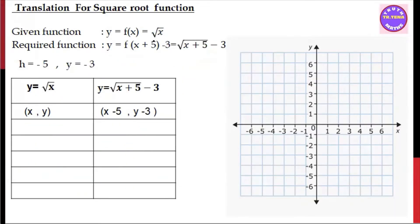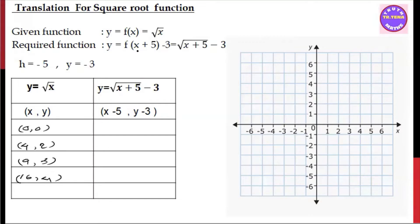Now, if you want to add an extra value, it will be: 0,0 — 4,2 — 9,3 — 16,4. Now, if you want to add x plus 5, then x plus 5 minus 3 is the function of root x plus 5 minus 3.